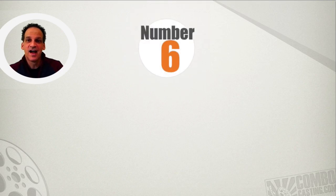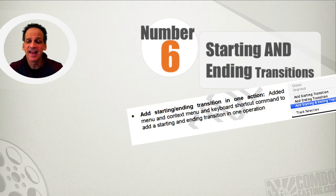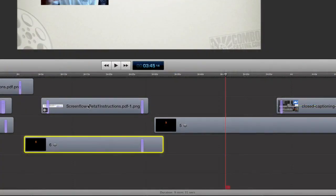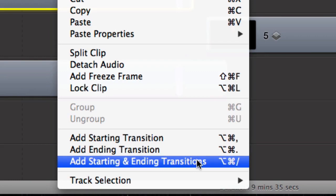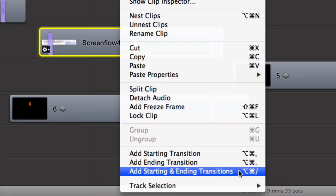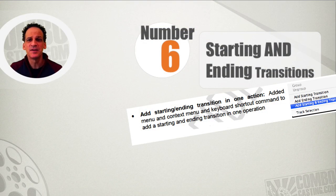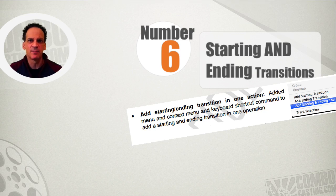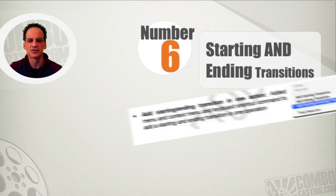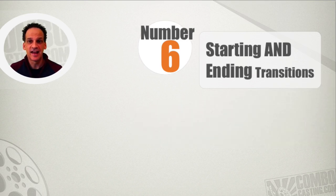The number six newest feature in ScreenFlow 4 is the ability to add starting and ending transitions. It's simple but it makes life much easier — now I don't have to scroll to the end of the track wherever that may be in my project to find the ending and add the transition. It's one of those little things that's going to save a lot of time in my production. Starting and ending transitions — great, thank you ScreenFlow.